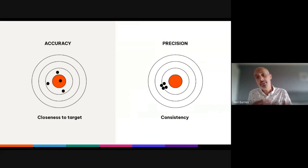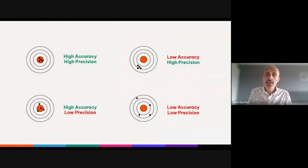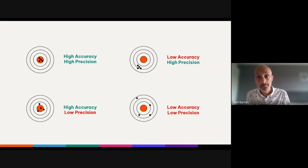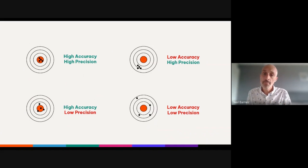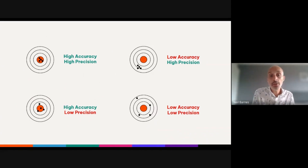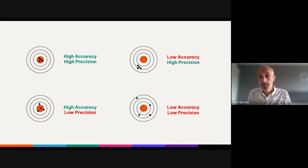When we look at accuracy and precision together, it gives us four different scenarios. Our ideal scenario is high accuracy and high precision, where every data point hits the intended target. An acceptable trade-off might be high accuracy and low precision, where the majority of data points hit the target but a small number don't. We then have low accuracy and high precision, where all data points are close together but far from the target. And finally, low accuracy and low precision — typically scattergun, with no pattern or trend.